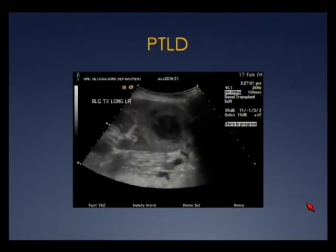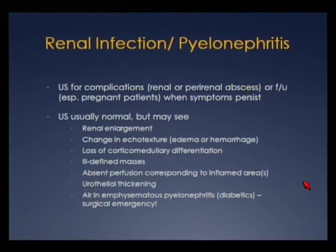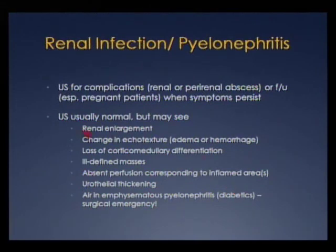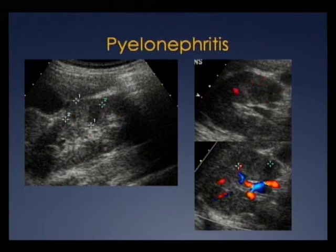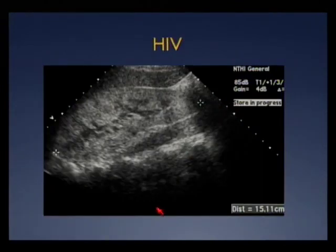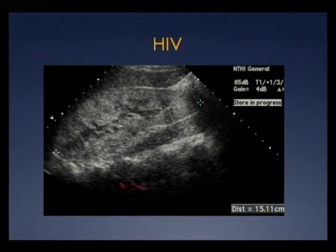Renal infection and pyelonephritis — we typically don't image the kidney with ultrasound for pyelo, but in patients who can't get CT, especially pregnant patients, we use ultrasound to look for complications. Ultrasound is typically normal in pyelo; findings may be very subtle. The most important thing to look for is air — emphysematous pyelonephritis is a surgical emergency. Here's a patient with pyelonephritis where findings are extremely subtle — questionable cortical echogenicity change and possibly decreased flow. HIV nephropathy hallmark: enlarged echogenic kidneys bilaterally — here's a 15-centimeter echogenic kidney.